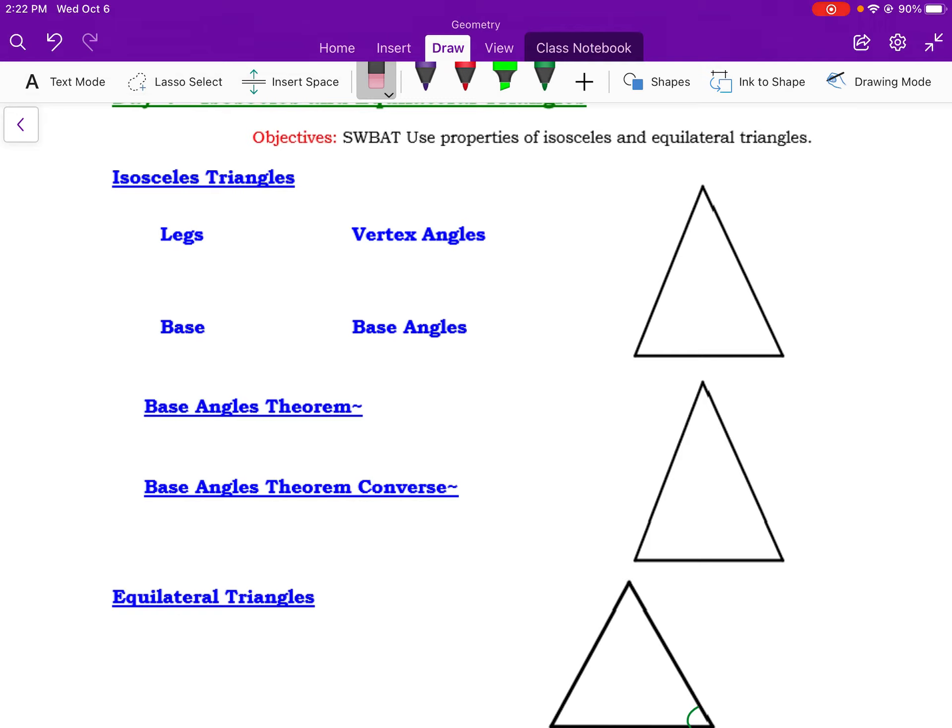So isosceles triangles are composed of, or if we reflect back to our first lesson, these are triangles that have two sides that are congruent. So if I were to label this diagram here, here's my isosceles triangle. These two sides are congruent. These are the ones that I classify as the legs. So the legs are my two congruent sides.